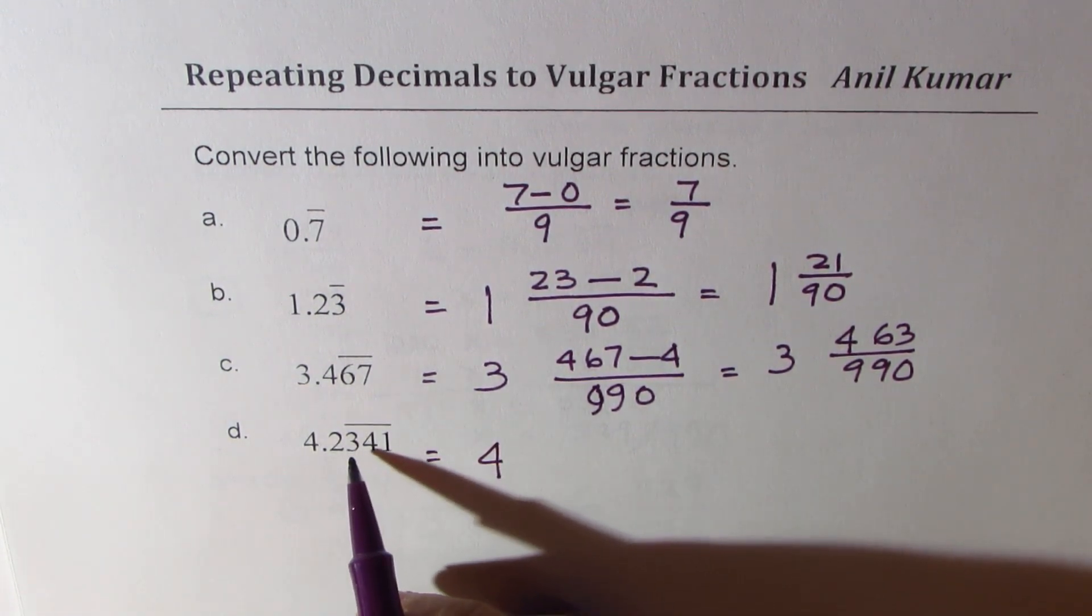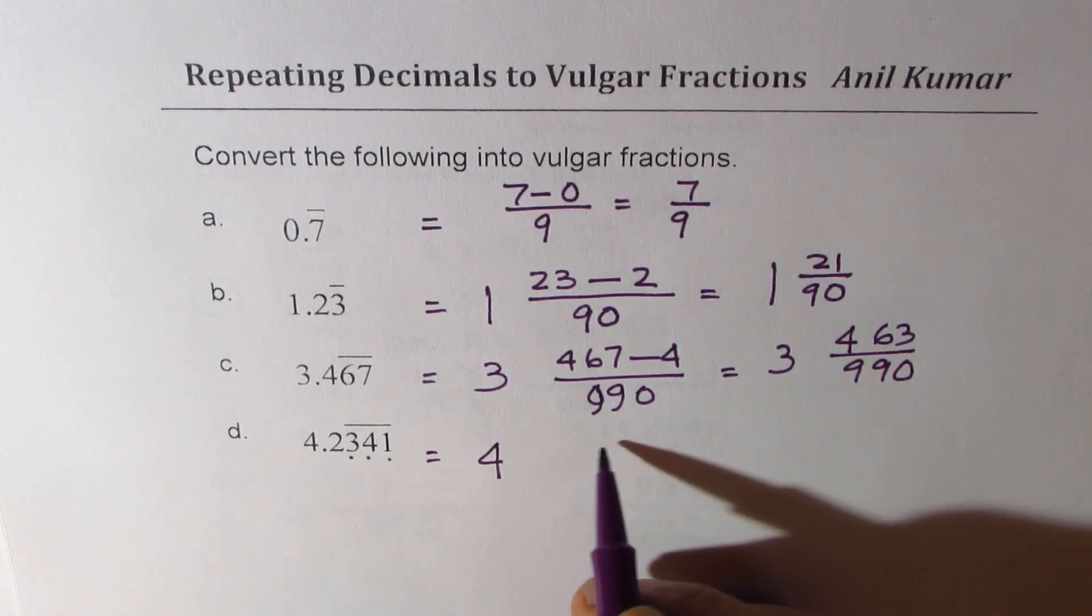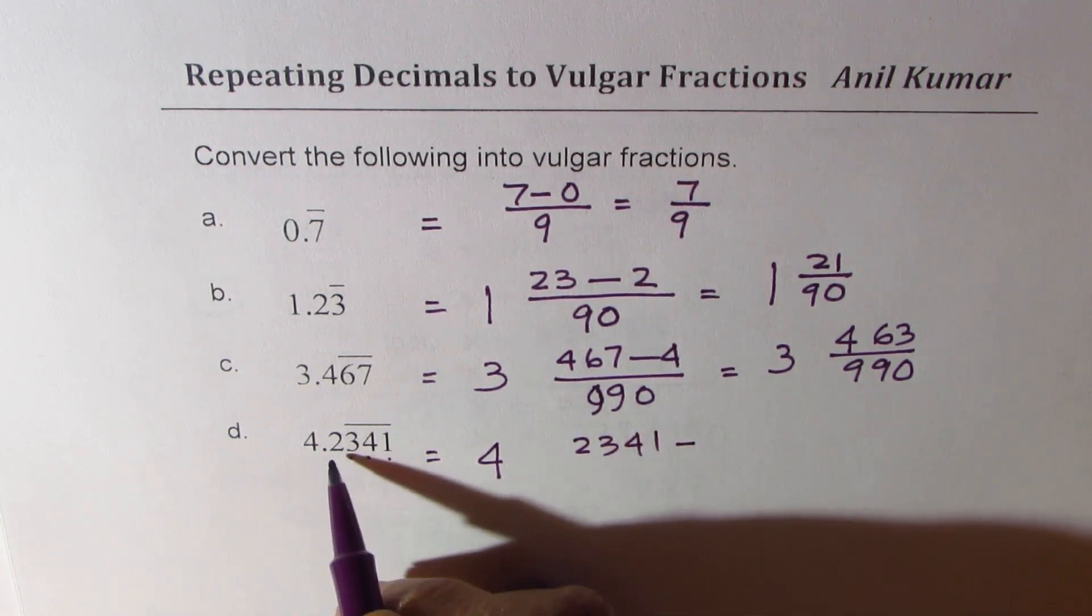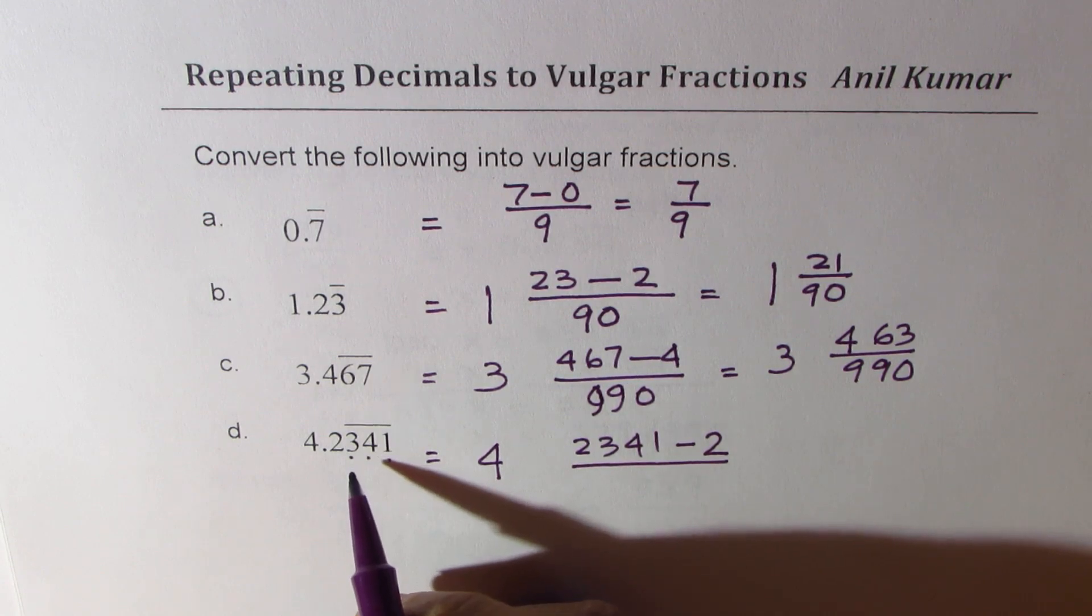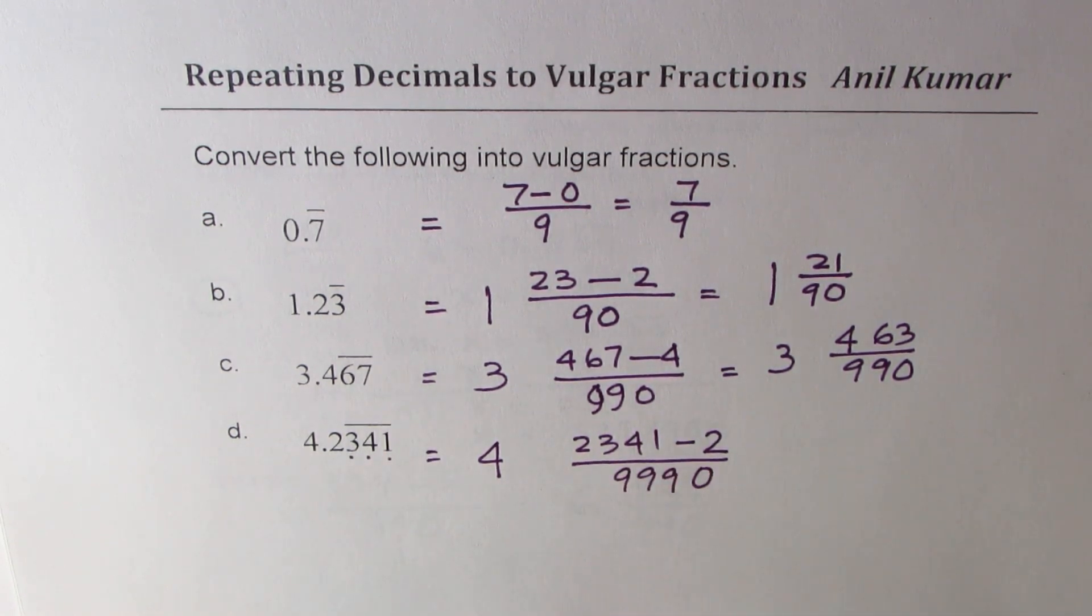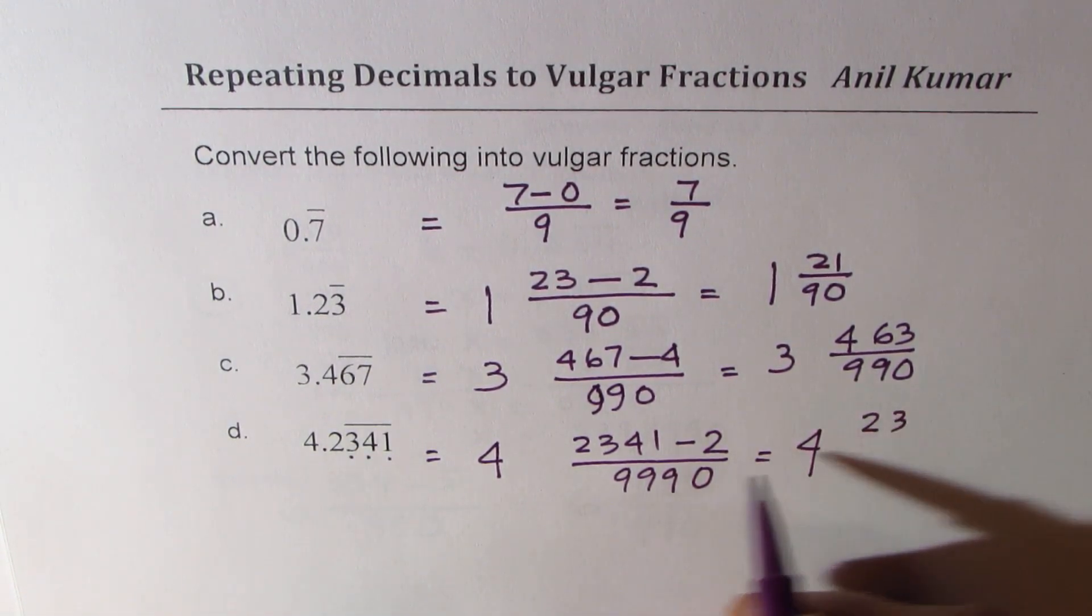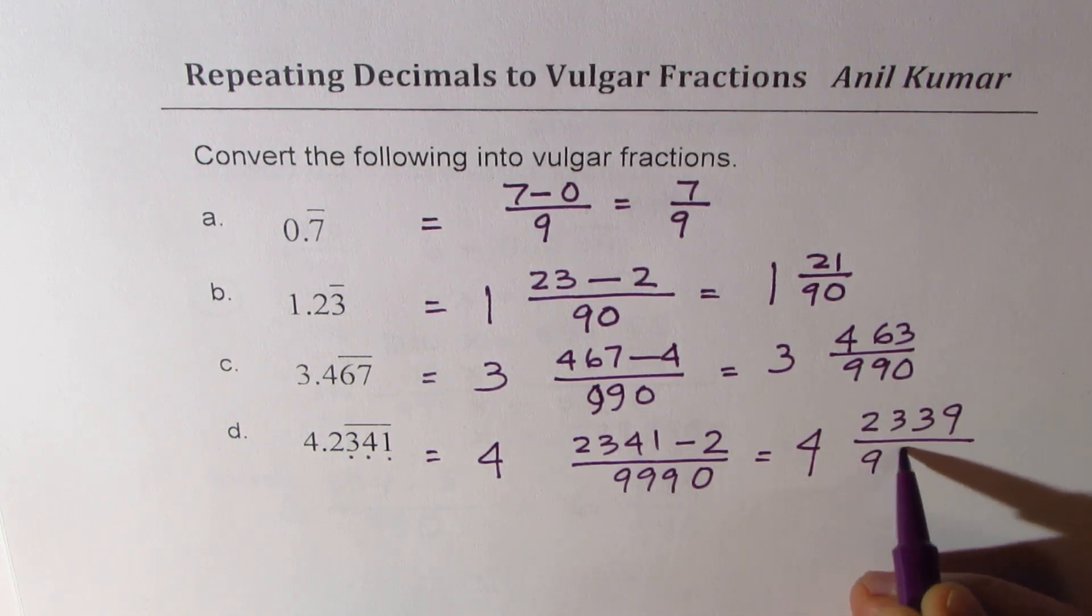And 1 zero, you get an idea. So this is 4 whole and we have 2339 divided by 3 nines and a 0. So that is how we could immediately write the answer. So in any multiple choice question when you get such types of questions it could be answered in no time.